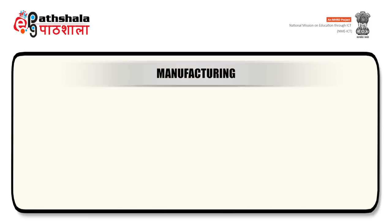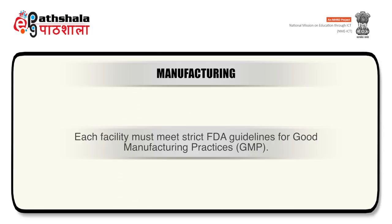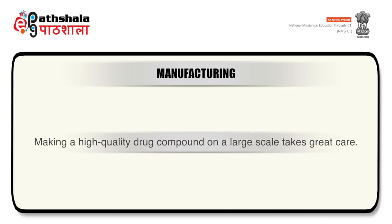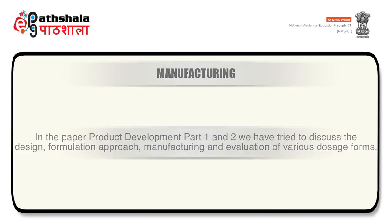After FDA approval, the next step is manufacturing. Going from small-scale to large-scale manufacturing is a major undertaking. Each facility must meet strict FDA guidelines for good manufacturing practices. Making a high-quality drug compound on a large scale takes great care. In the paper Product Development Part 1 and 2, we have discussed the design, formulation approach, manufacturing, and evaluation of various dosage forms.